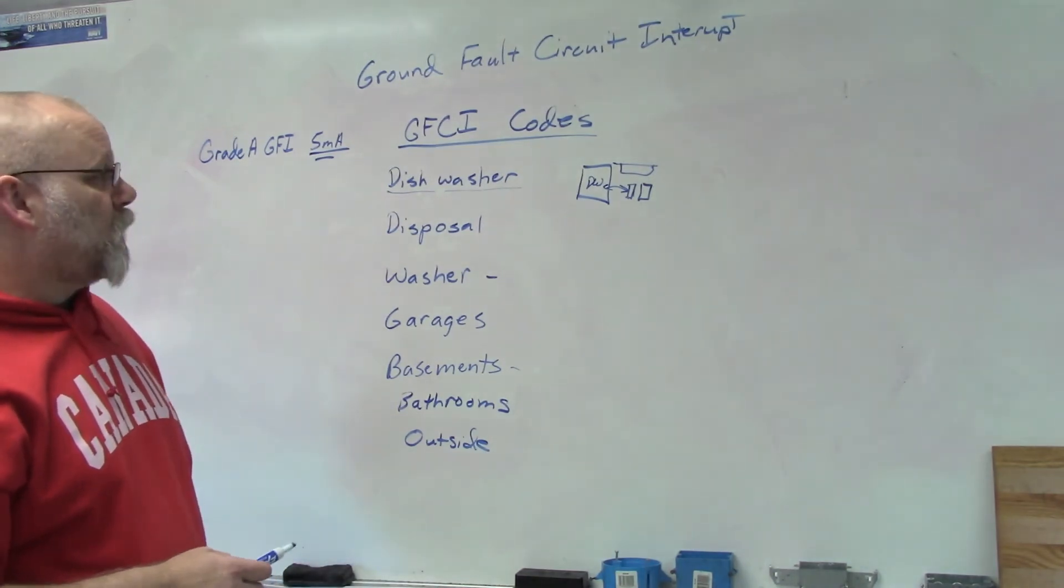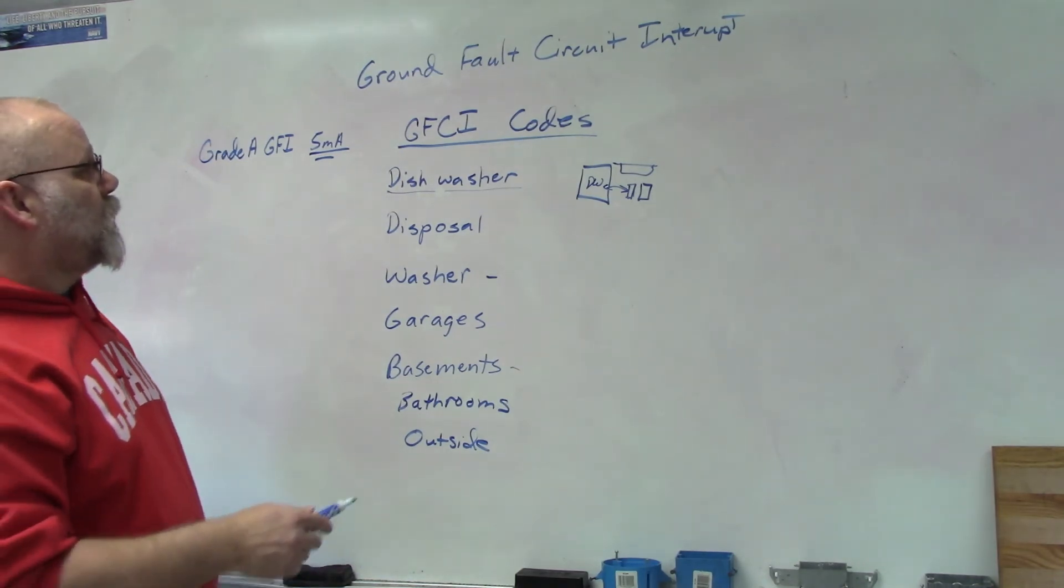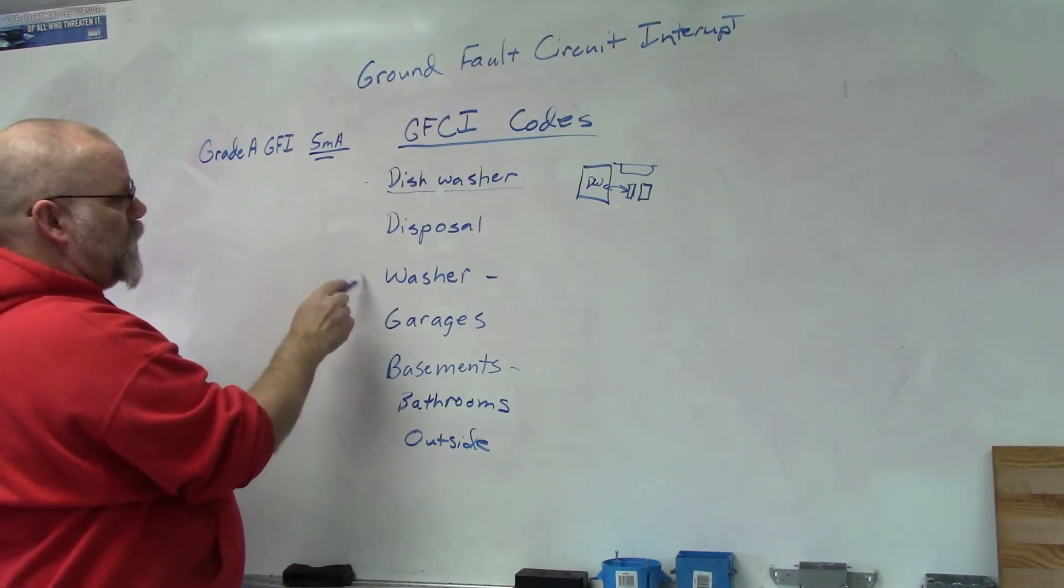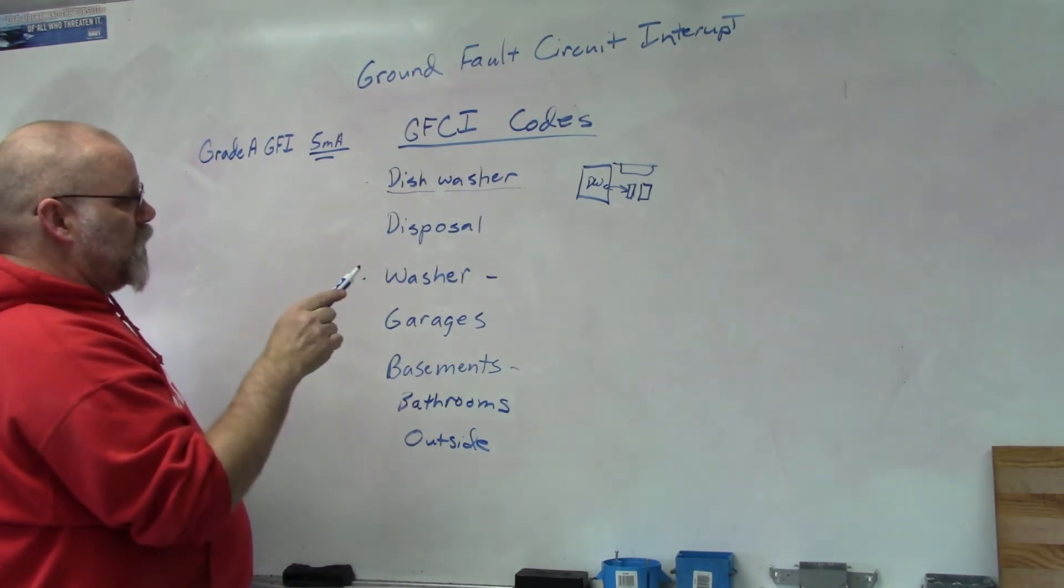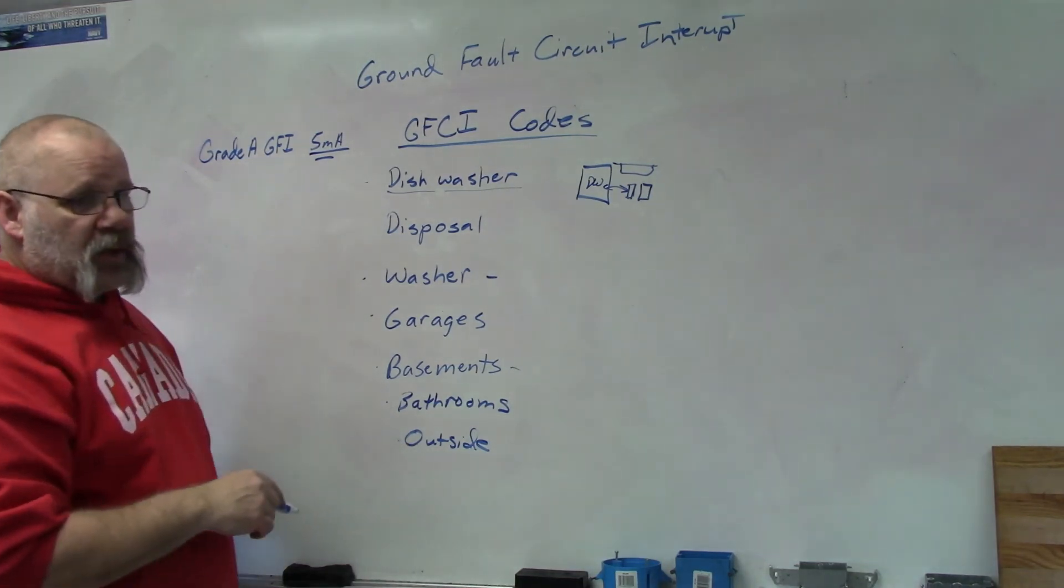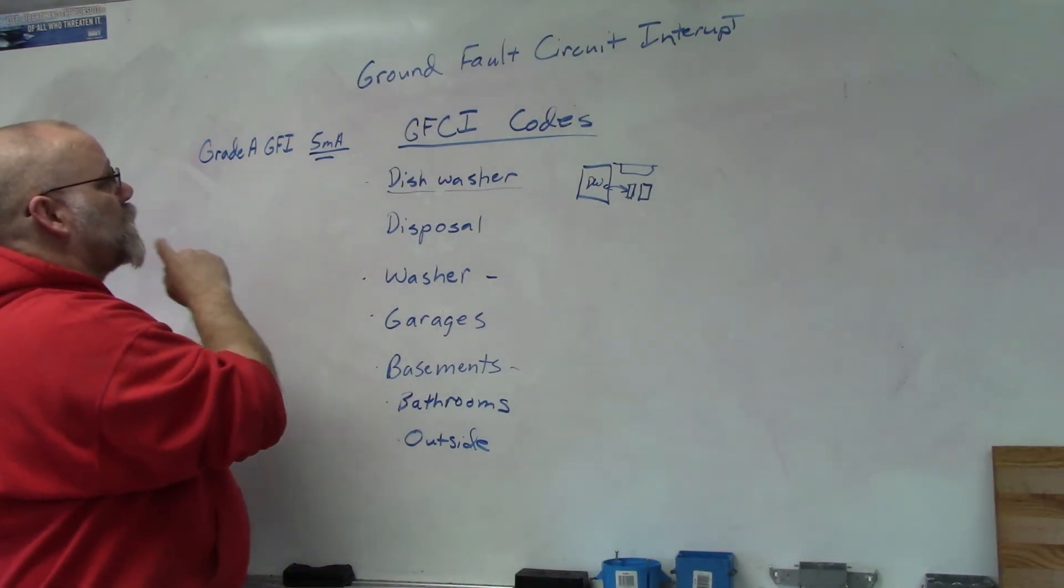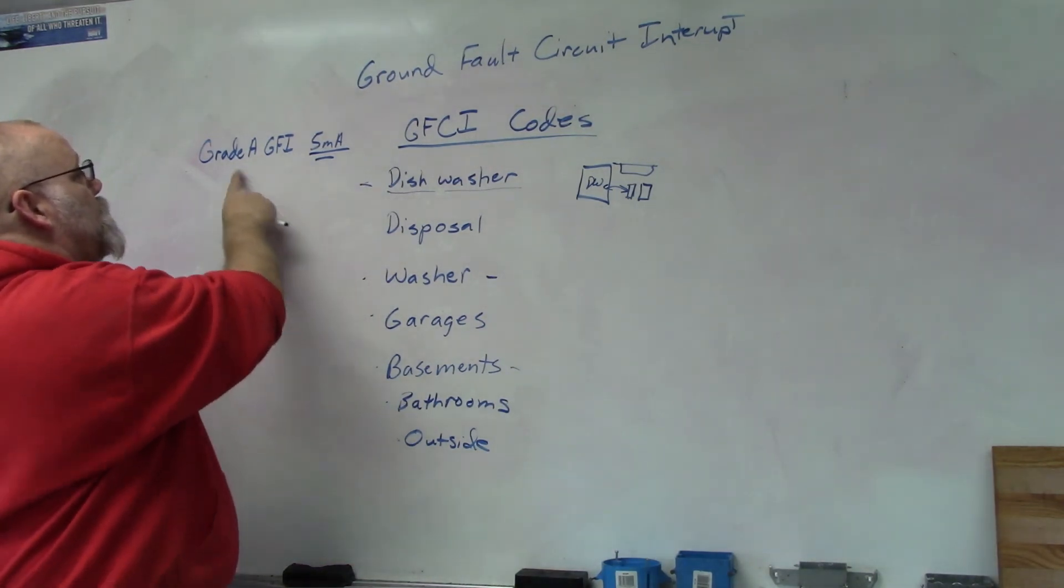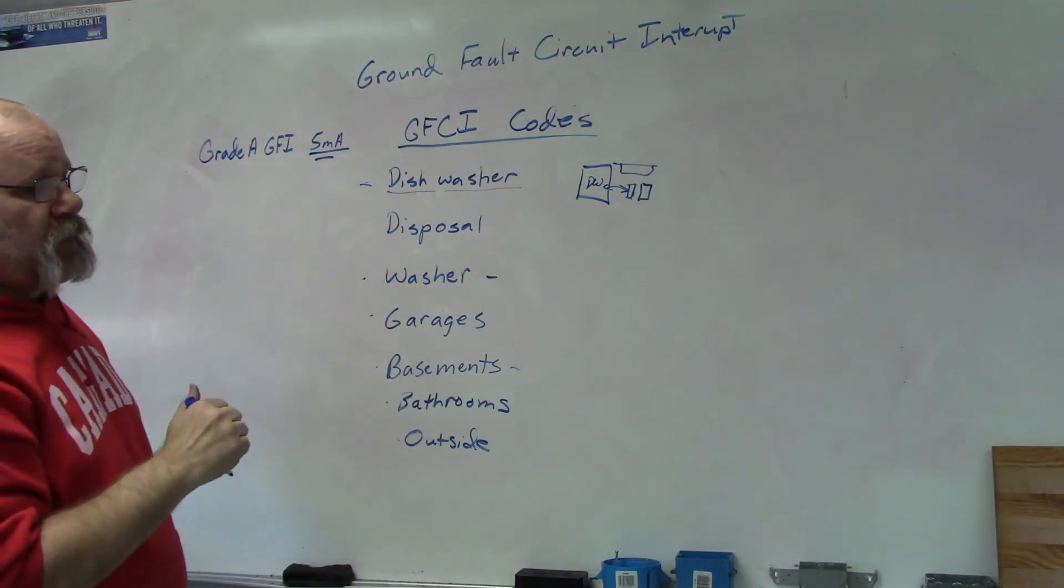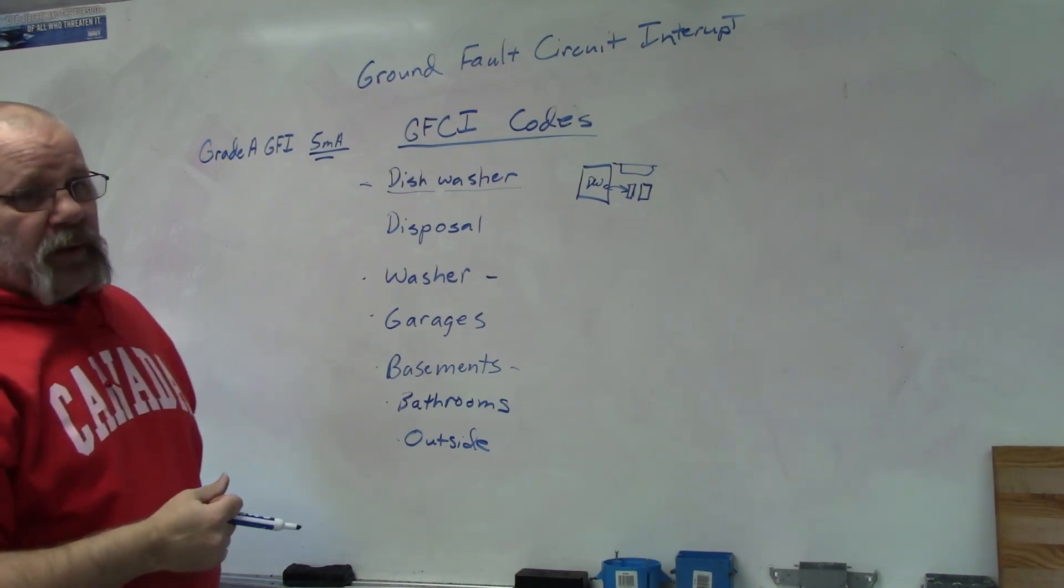So going over it again, new ones on there you should have to have your dishwasher, your disposal, and your washer will have to be a GFCI. Your garage should be on a GFCI, your basements, bathrooms, and outsides should all be on GFCIs. The grade A GFCI, which is 5 milliamps, which is the best, I would put them all on that breaker.